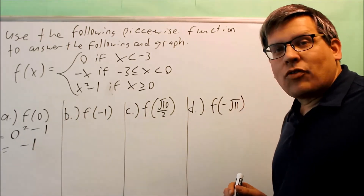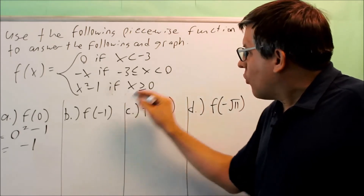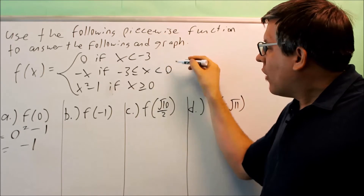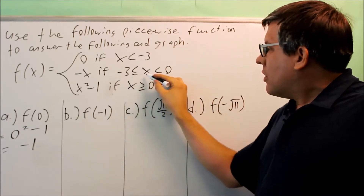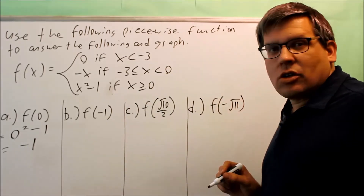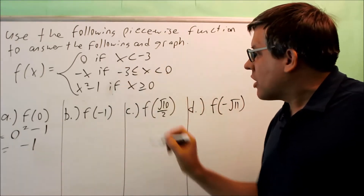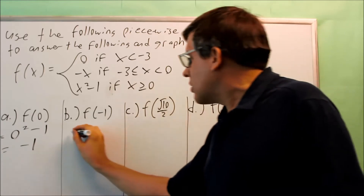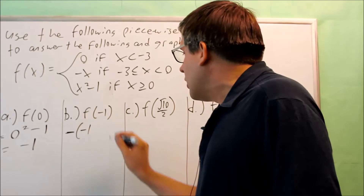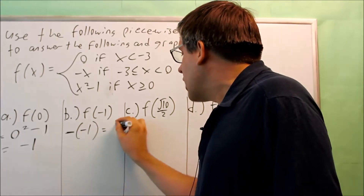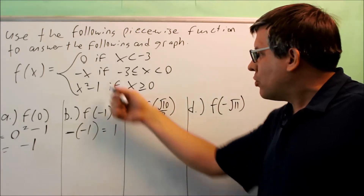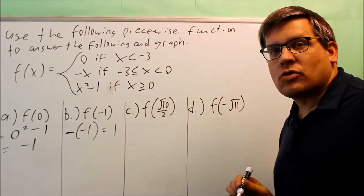Next, let's find f of negative one. Negative one is not less than negative three, so it doesn't belong to the first condition. However, negative one is larger than negative three and less than zero, so we use the second equation. Be careful — the formula has a negative in it and we're plugging in negative one, so the two negatives cancel, giving you positive one.